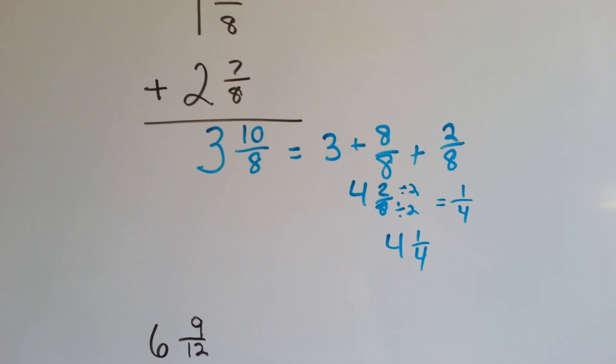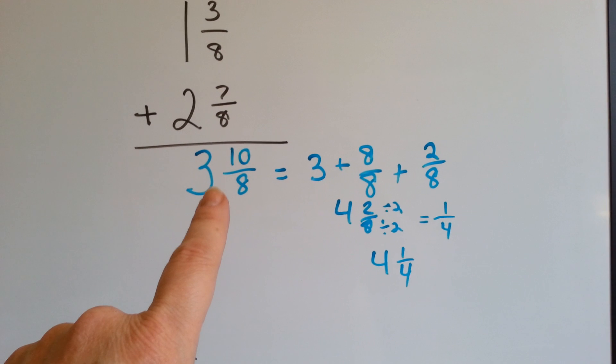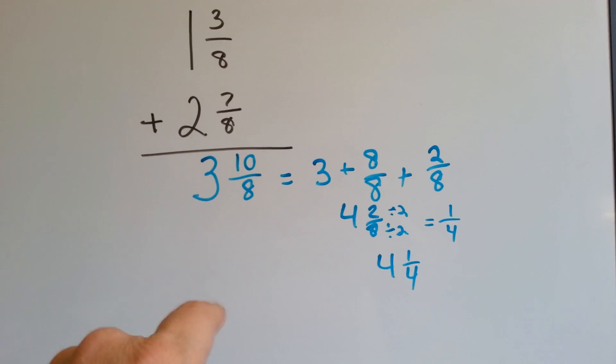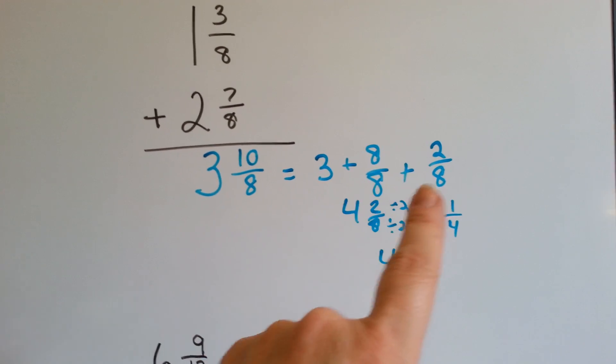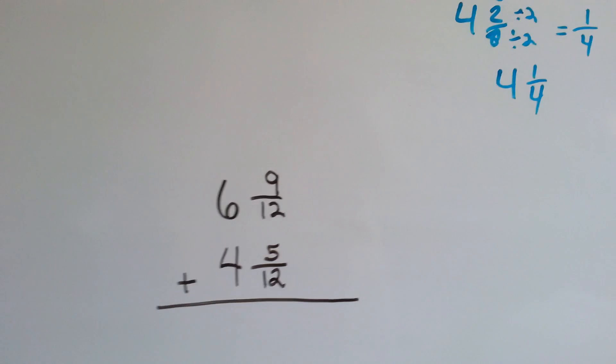If you stop right here, you're not going to have the right answer because it's not simplified. The answer is not a 3. It's a 4. And it's 4 and 1/4 because even here, at 4 and 2/8, it's not simplified and it could be marked wrong. Let's try this one.